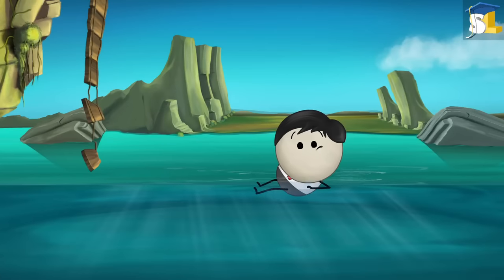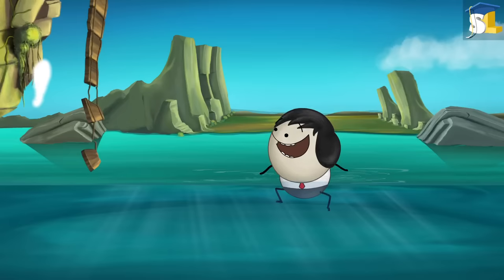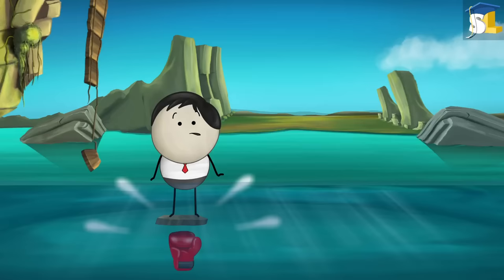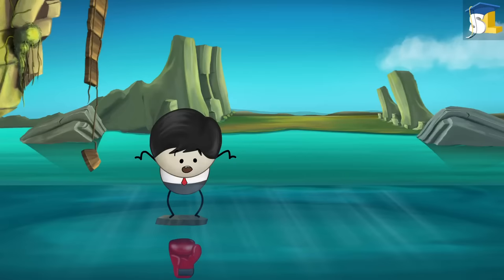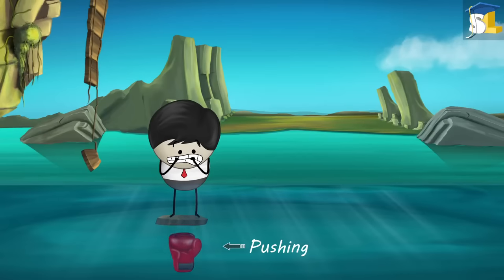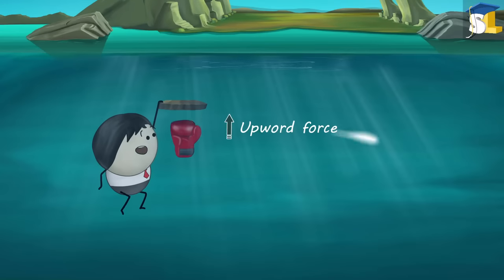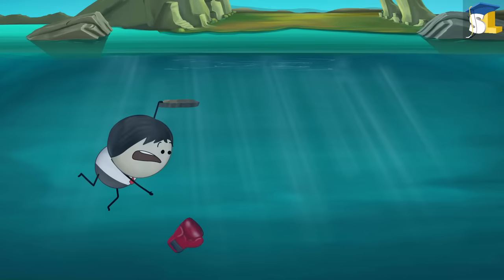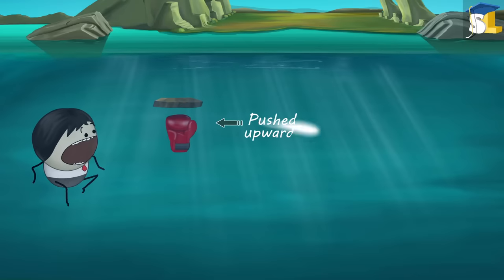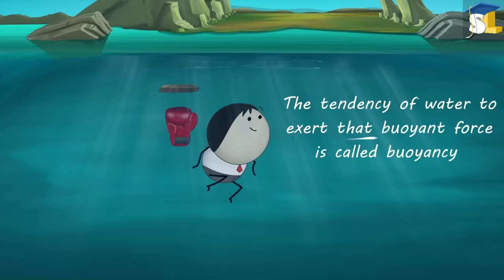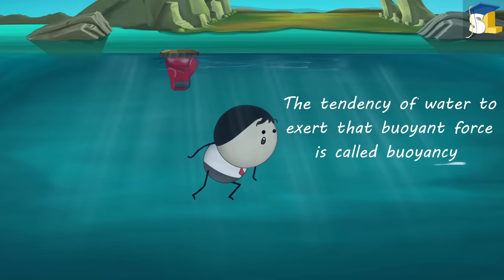Let me give you one more example. Place a piece of wood in water and push it downwards. What do you observe? It seems like something is pushing the piece of wood upwards, right? Water exerts an upward force on the wood. That is why the wood is getting pushed upwards. This force is called buoyant force and the tendency of water to exert that buoyant force is called buoyancy.